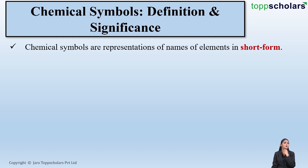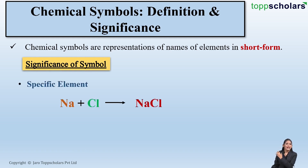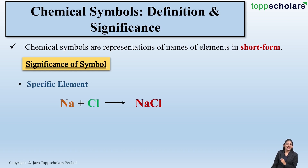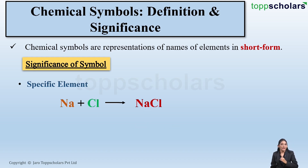But what is the significance of using a symbol? Chemical symbols are used to represent a specific element. For example, here we have a reaction. In this reaction, Na represents the element sodium, whereas Cl represents the element chlorine. And NaCl represents the compound sodium chloride. So chemical symbols help us to represent a specific element.